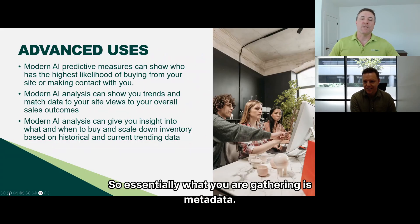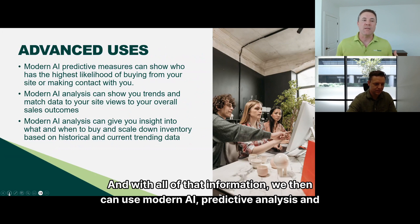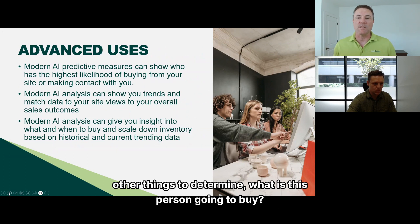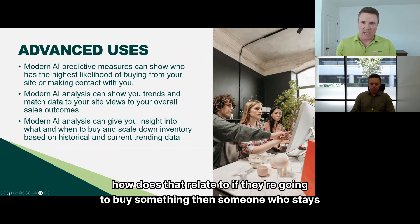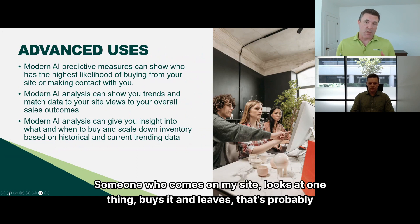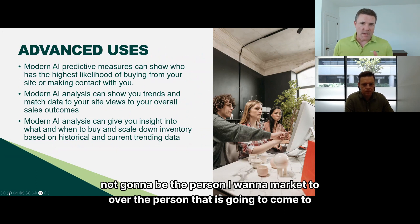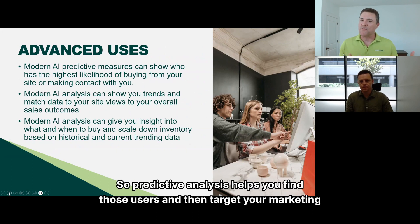Let's talk about artificial intelligence and where it fits in. Essentially what you're gathering is metadata about your site. With all that information, you can use modern AI predictive analysis to determine what a person is going to buy. If someone stays on your site and looks at an item for 10 milliseconds versus someone who looks for more than a minute, AI can predict whether that person is likely to buy and whether you should market directly to them.